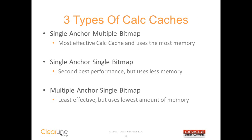S-Base will use one of three types of calc caches when it's aggregating the cube. The single anchor multiple bitmap is the best calc cache, but it also needs the most memory. The single anchor single bitmap is a little less effective, but it requires less memory. And the multiple anchor single bitmap is the least effective calc cache, but it also requires the smallest amount of memory.